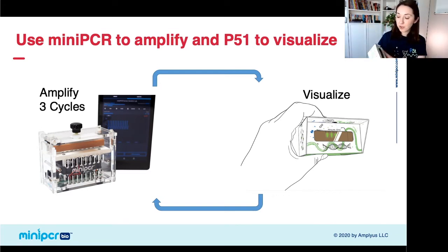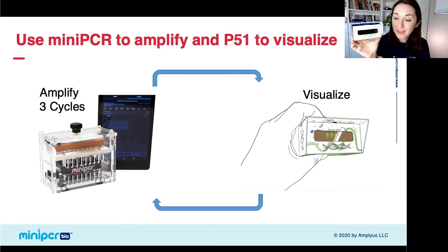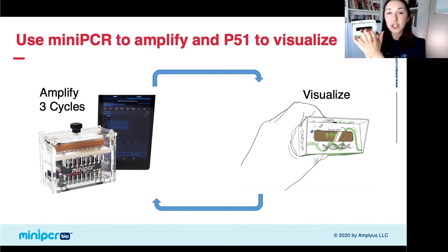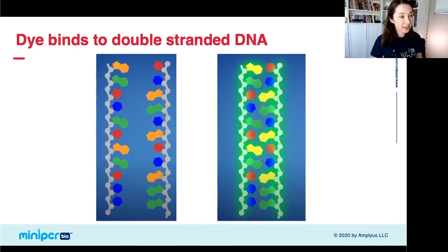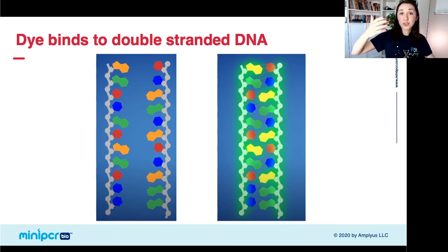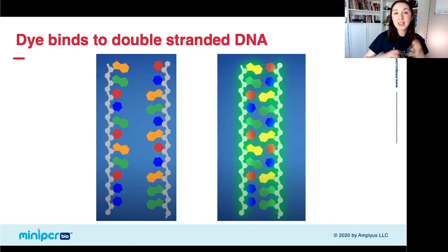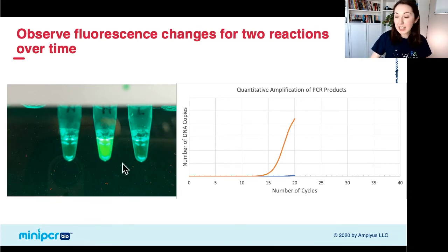After they amplify for a few cycles, students are going to use our P51 fluorescent viewer. They'll look for a fluorescent readout of amplification. This works because we've added a fluorescent dye to the samples that will glow when it finds double-stranded DNA. So as students produce more and more DNA in their tubes as the PCR reaction progresses, they're going to get a greater and greater fluorescent signal. It will look something like this — we have three tubes: our negative control, a tube with high concentration of DNA, and a tube with low concentration.